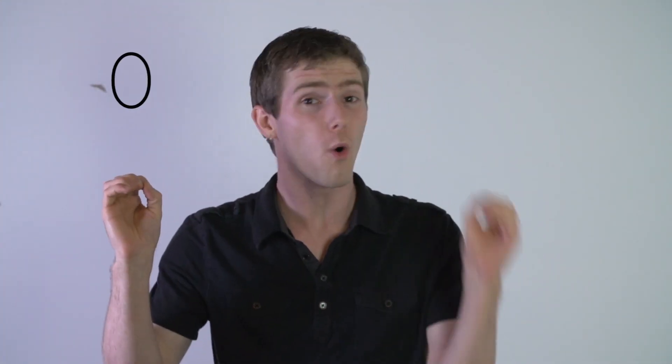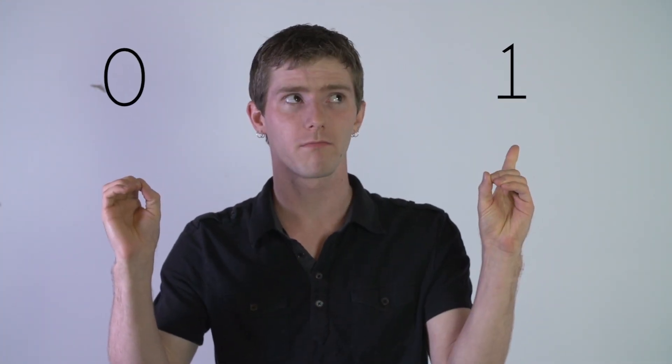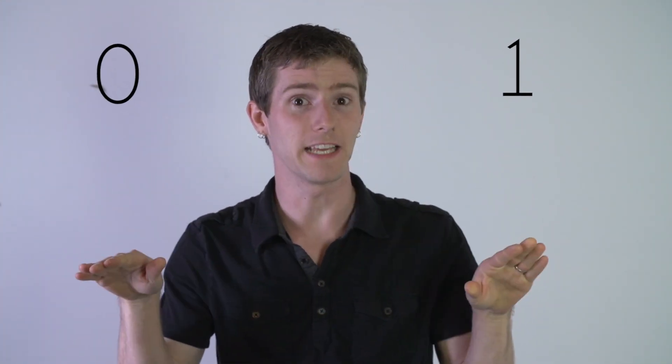A bit is the smallest form of data, and it's basically like an on-off switch. It can be either a zero or a one, but that's it.